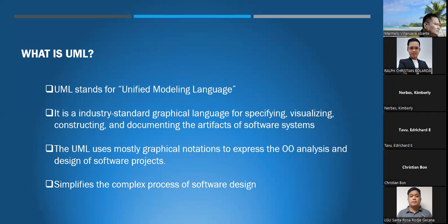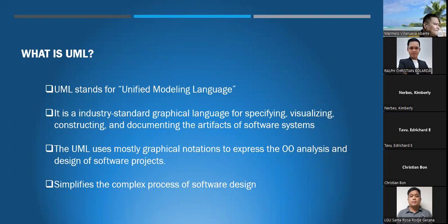UML stands for Unified Modeling Language. It is an industrial standard graphical language for specifying, visualizing, constructing, and documenting the artifacts of a software system. When you are trying to develop a system, the first step is to visualize what you are trying to develop — UML will help you do that. UML uses mostly graphical notation to express object-oriented analysis and design for a software project, simplifying the complex process of software design.